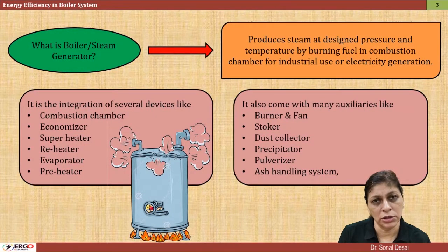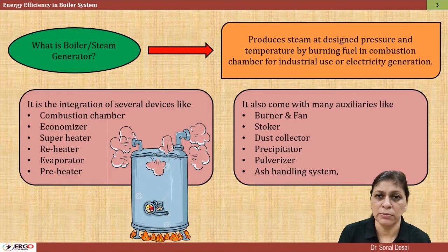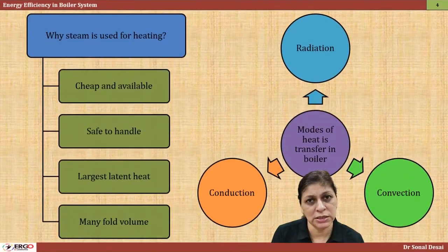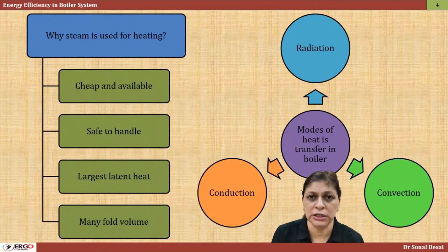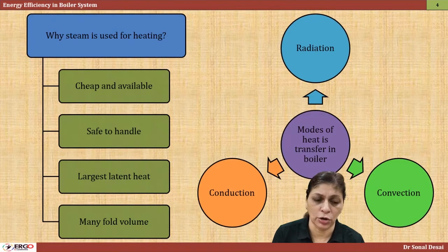In each and every corner of the industry there is process heating, and for all process heating, one or other type of boiler is used. The very reason behind that is all industries use steam. So why steam is the most common fluid for heating, that is talked of. Modes of heat transfer as well as their different segments in a boiler are also talked of.